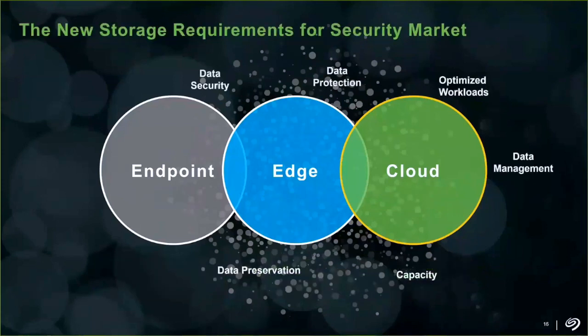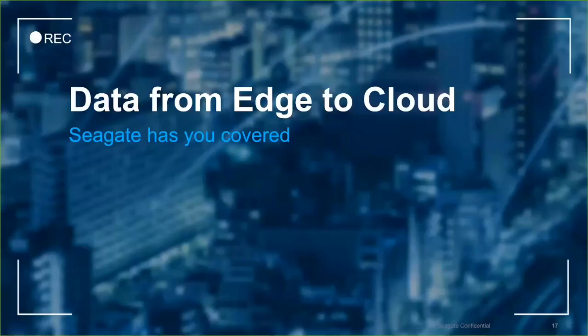Storage priorities vary across different tiers. Data security is the biggest consideration for endpoints, while data preservation and protection is key for the edge. The cloud requires significant considerations around management, capacity — dealing with racks of data — as well as quality of service and data availability. With data flowing from the edge to the cloud, let's look at which Seagate drives best fit these different tiers.